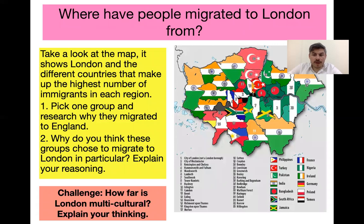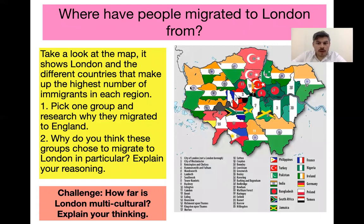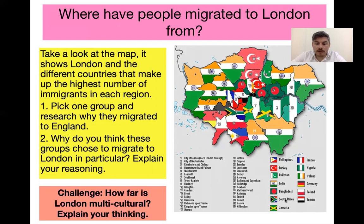For the first task, here we have a map of London broken down into its 33 neighbourhoods — the 33 districts of London. Each district has a different flag on it. You can see the key for the flags underneath: Philippines, Turkey, Pakistan, India, Bangladesh, and so on.